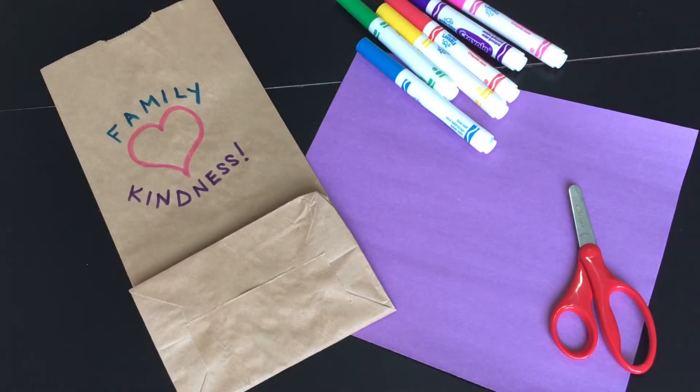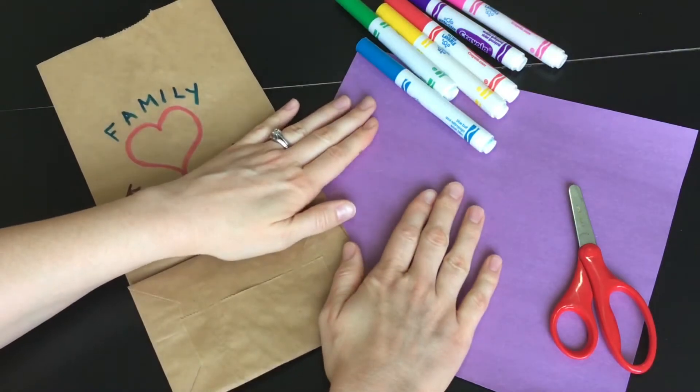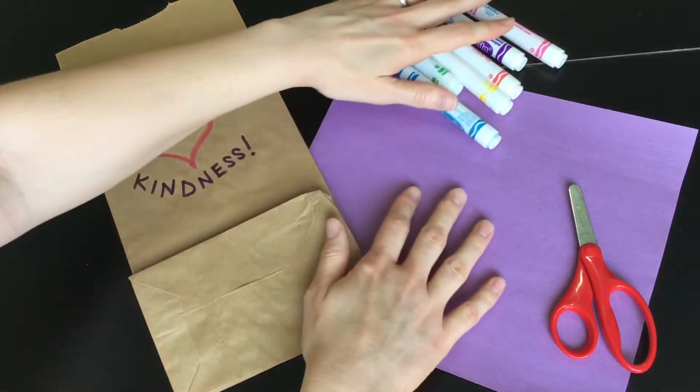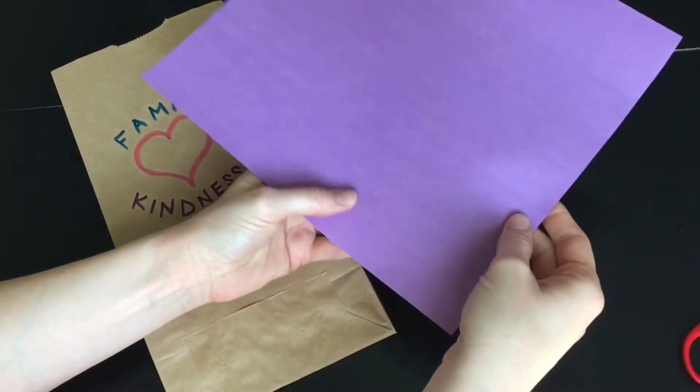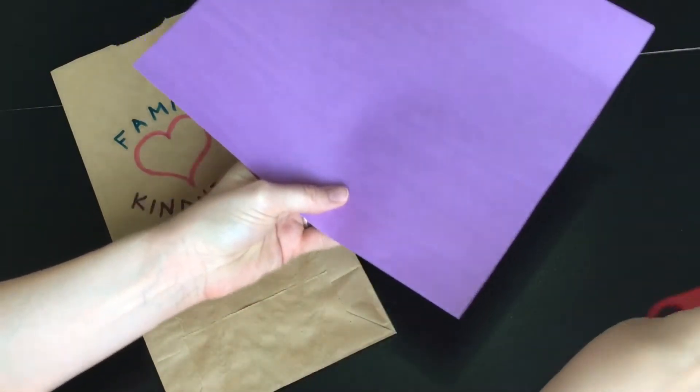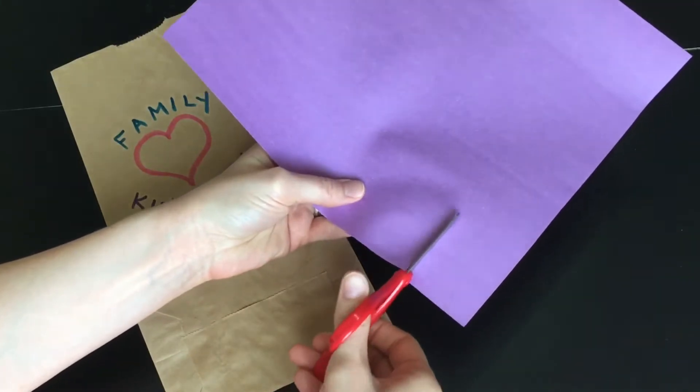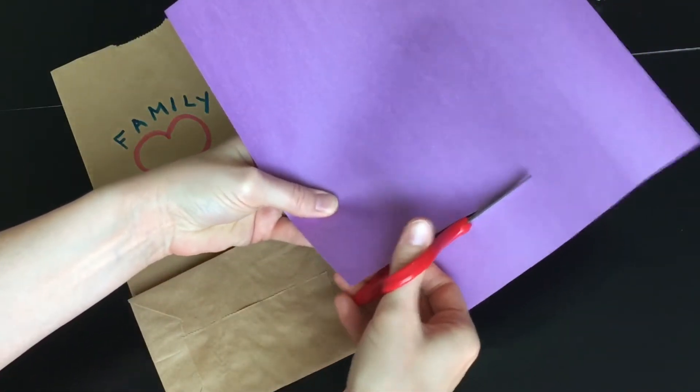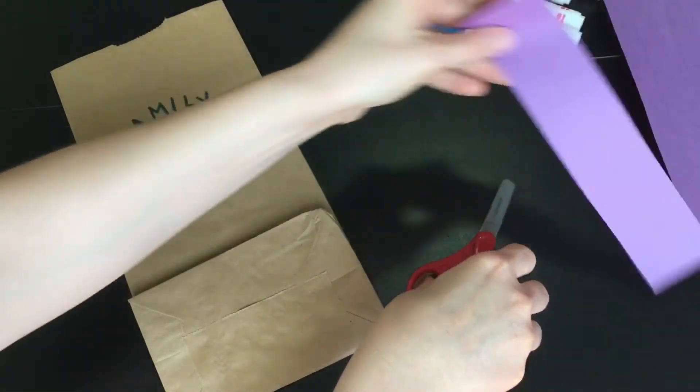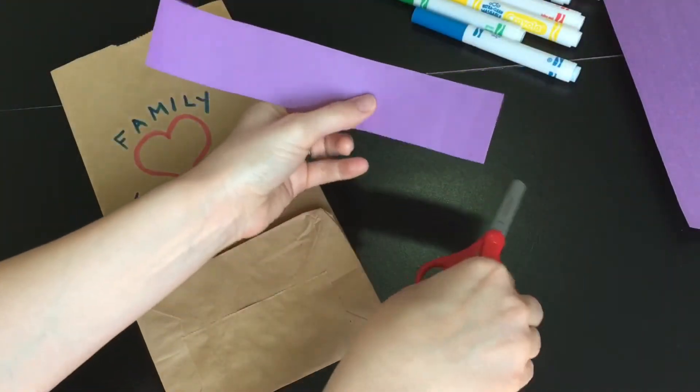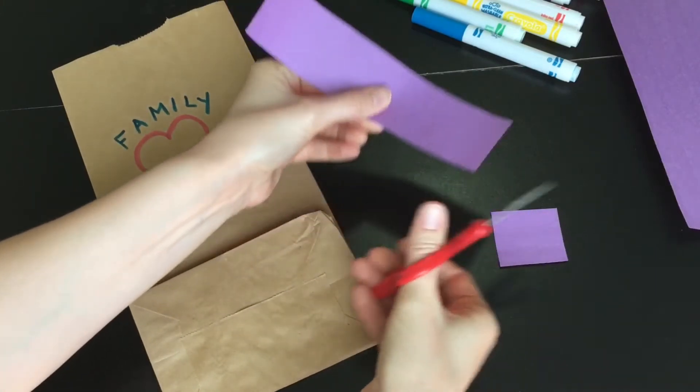To start, grab any piece of paper and we're going to make small pieces so that we can draw various feelings. What I do is cut a strip and make each square about an inch and a half by an inch and a half.